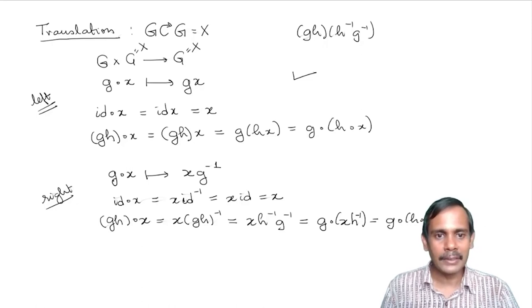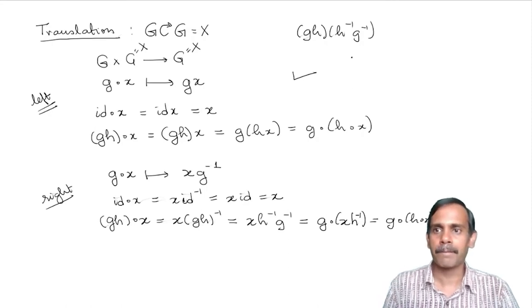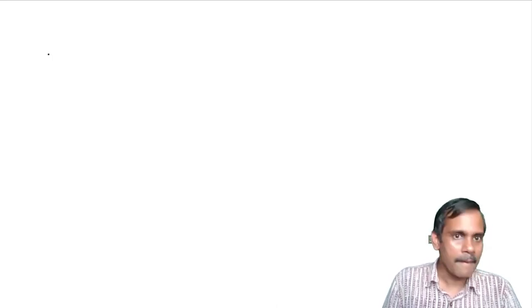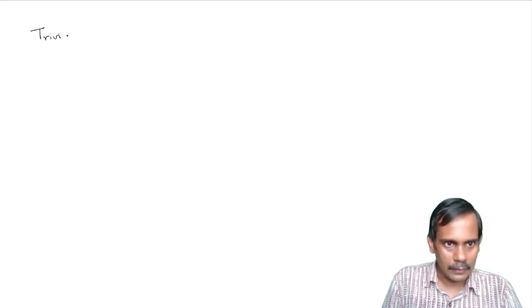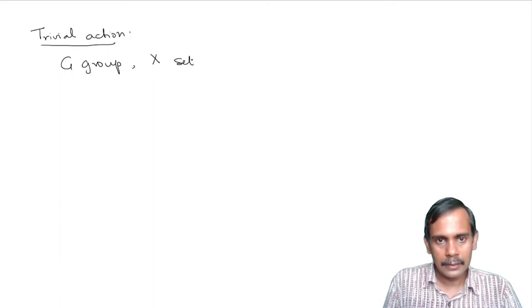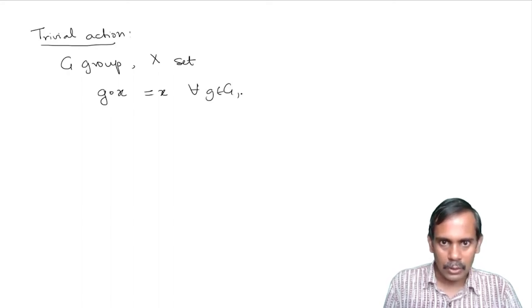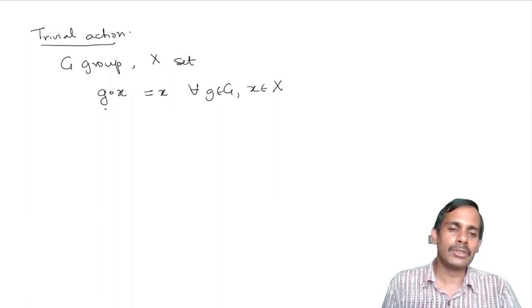So we have two translation actions: the left translation action given by g dot x equals gx, and the right translation action given by g dot x equals x times g inverse. Let me also give the trivial action: you take G to be any group, X any set, and define g dot x to be x for all g in G and all x in X. It's easy to verify this is an action — it's one where nothing happens.